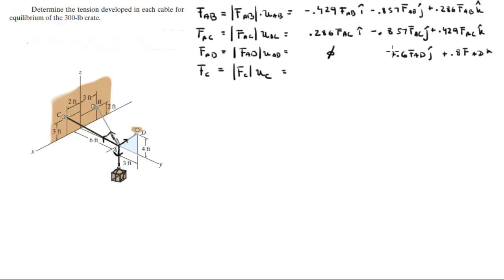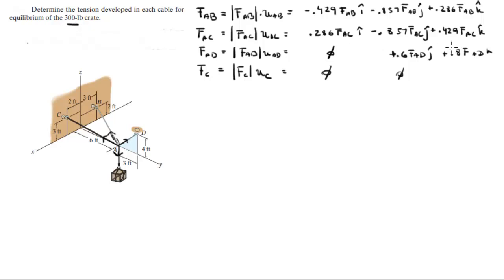Correction: the j-component of FAD is positive 0.6, not minus. For the crate tension, the i and j components are 0. Since the magnitude is given as 300 pounds and the unit vector points straight down, the crate force is −300k.